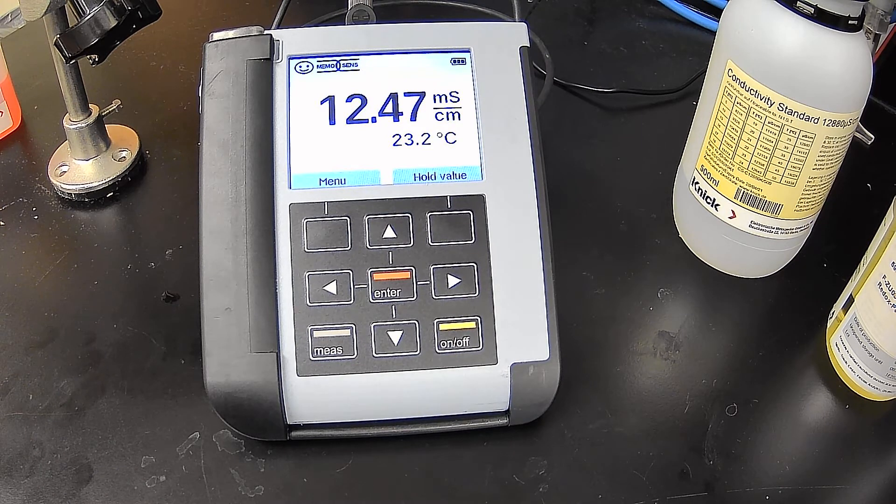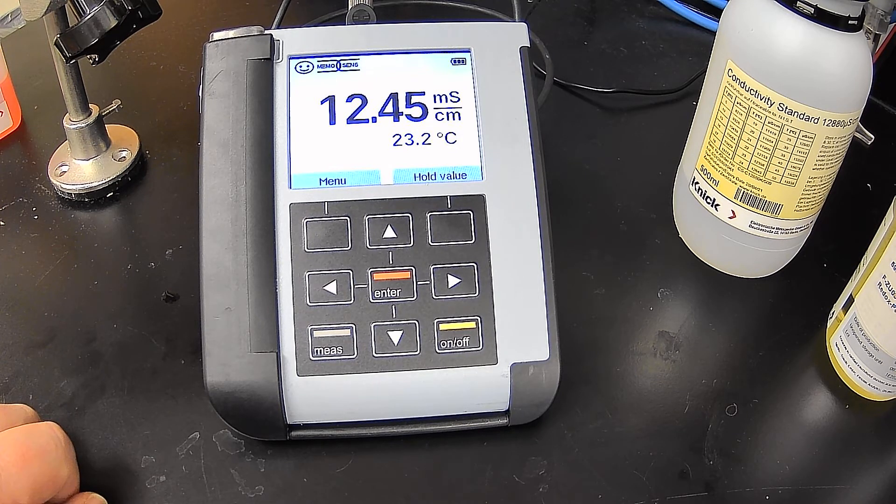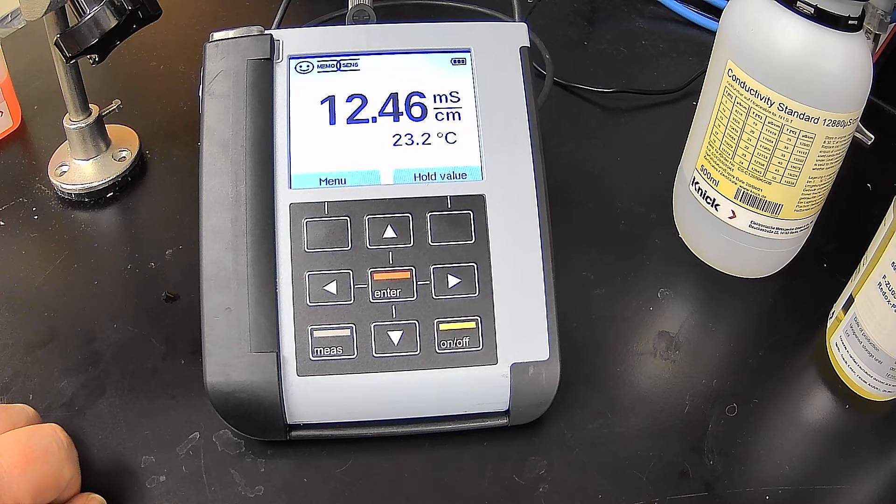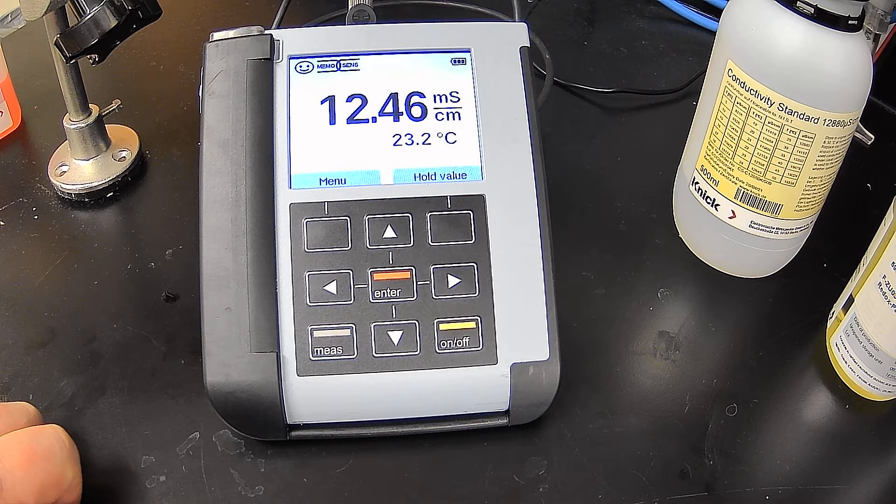The information from the microprocessor was loaded into the portable, and it gave you the serial number, the manufacturer, of course Kinnick, the type of electrode, and the serial number of the electrode, which is a valuable piece of information as well.